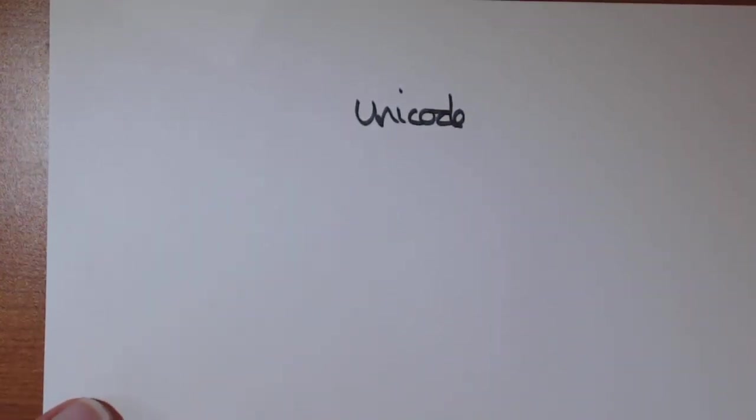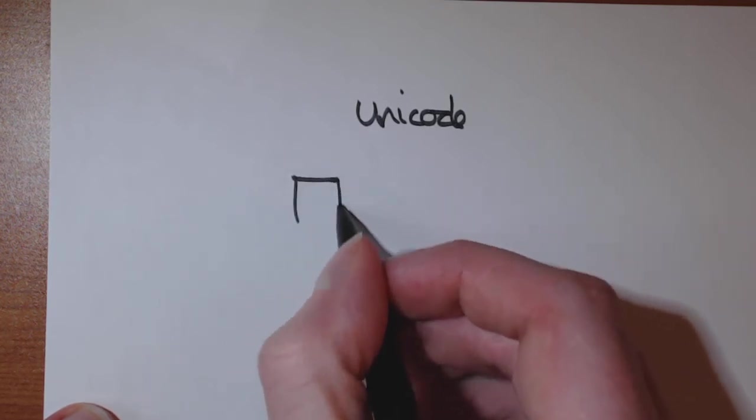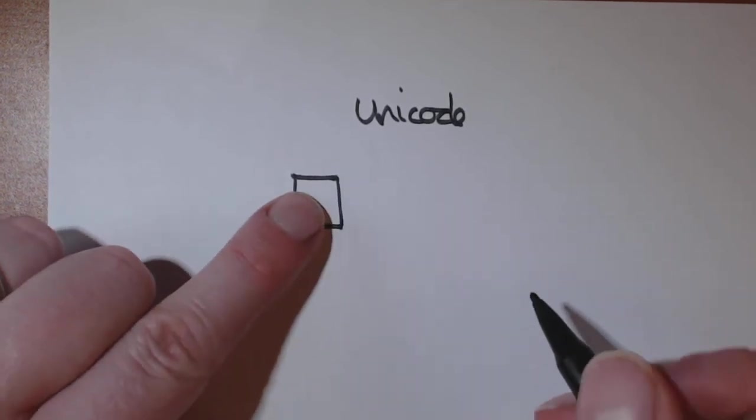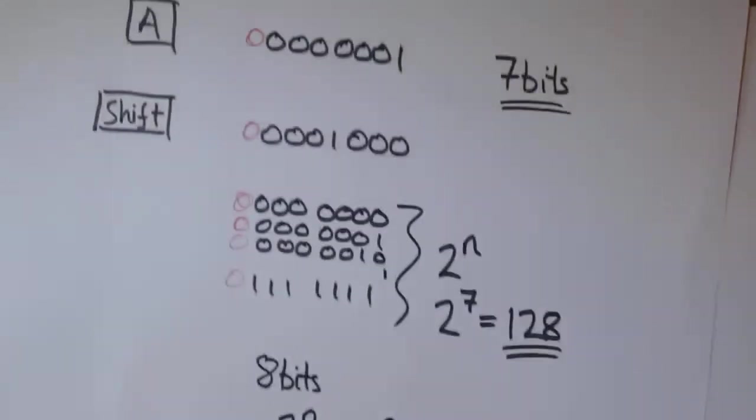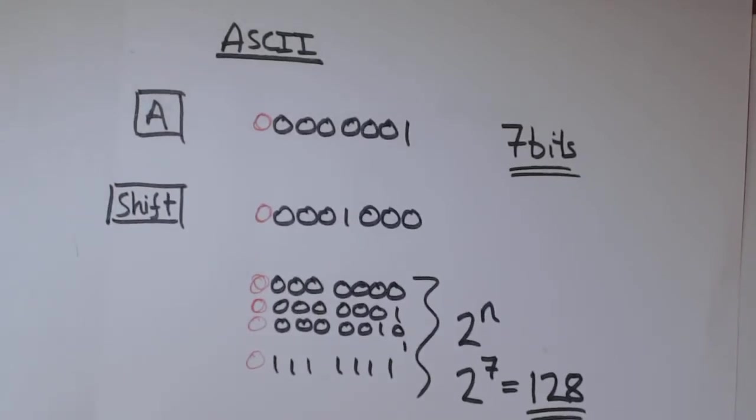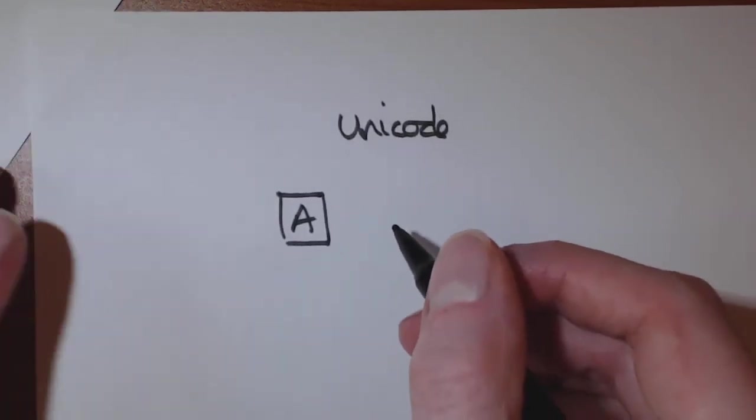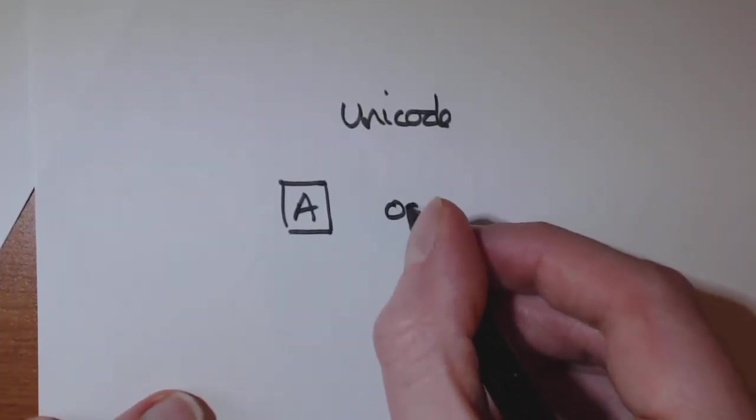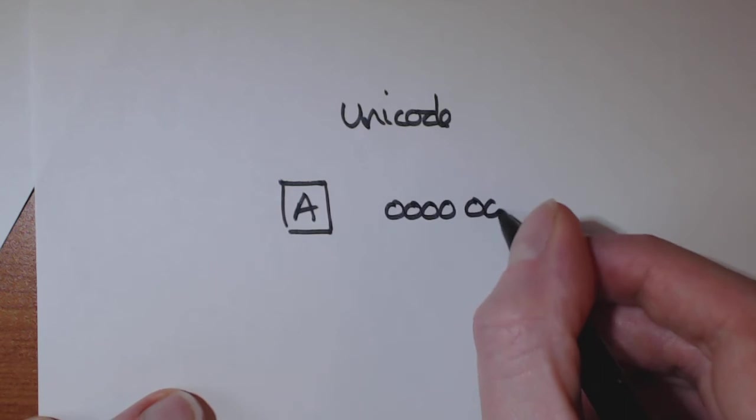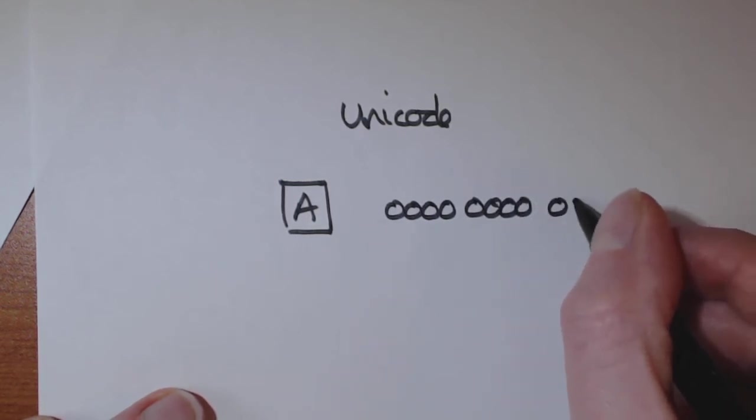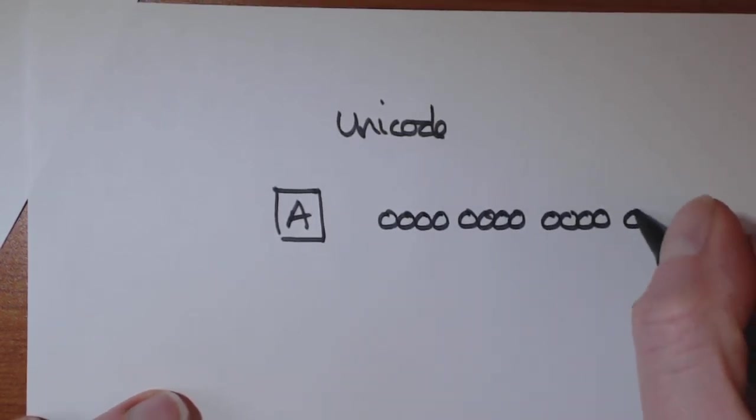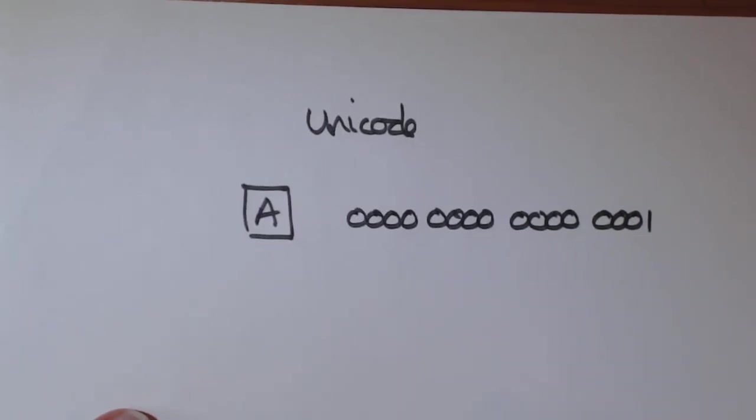Now, with a Unicode keyboard, you press a key and it doesn't just send 7 bits. So ASCII sends 7 bits. With Unicode, it actually sends 16 bits.